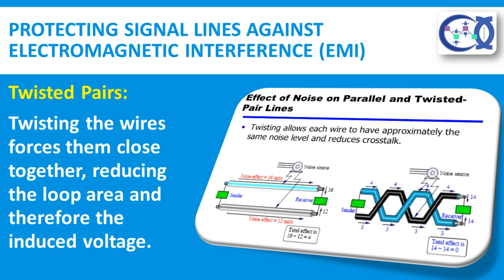Now we will discuss twisted pairs. The simplest way to reduce magnetically induced interference is to use twisted pair wires. This applies both for shielded and unshielded cables, and for interference caused by shield currents or from other sources. Twisting the wires forces them close together, reducing the loop area and therefore the induced voltage. Since the currents are flowing in minimum loop areas, magnetic field generation is also reduced. The effectiveness of twisted pair wire increases with the number of twists per unit length.